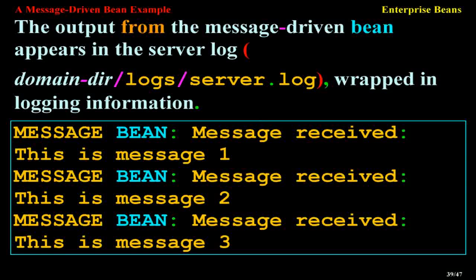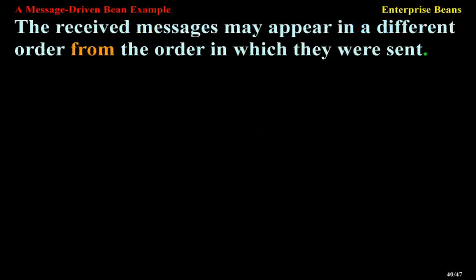The output from the message-driven bean appears in the server log, wrapped in logging information: 'Message Bean: Message Received: This is message 1', 'Message Bean: Message Received: This is message 2', 'Message Bean: Message Received: This is message 3'. The received messages may appear in a different order from the order in which they were sent.